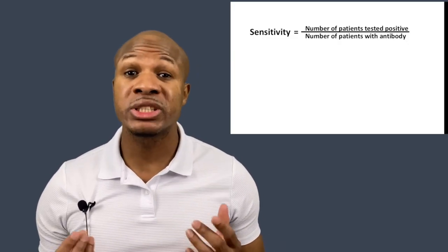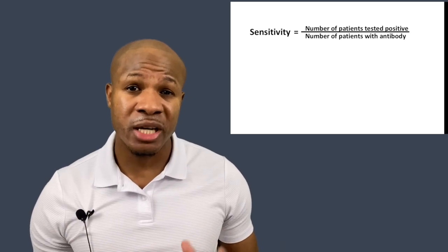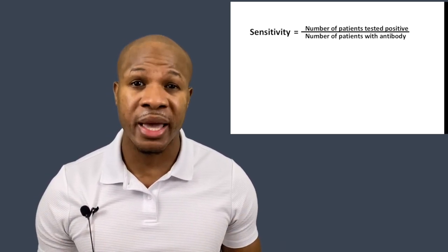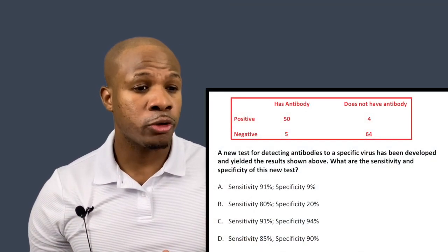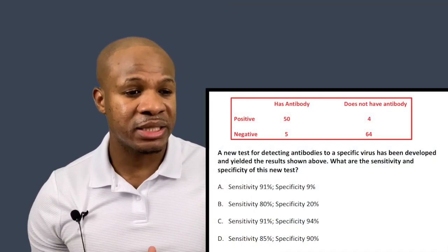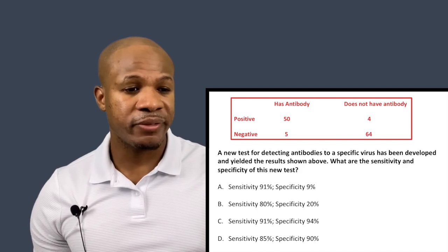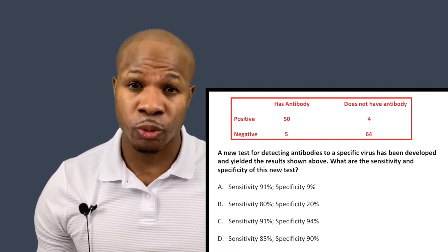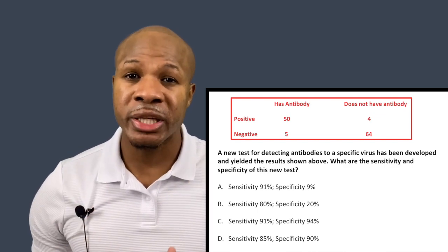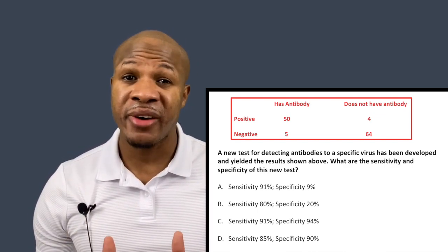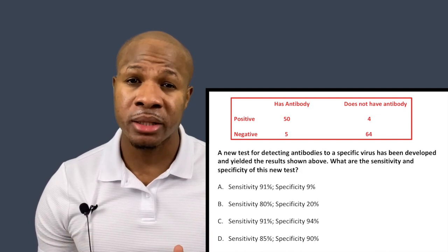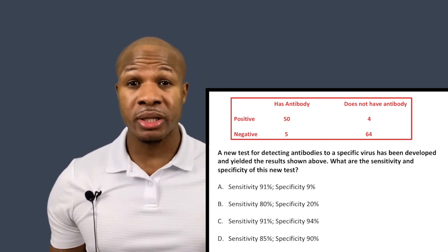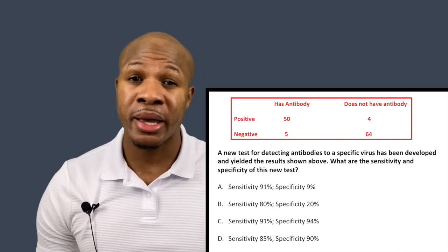For sensitivity, I want this test to tell me that I actually have the antibody when I do have the antibody. For the total amount of patients who actually did have the antibody, there's a total of 55 — that's 50 plus 5. Let's look at how good this test was at letting these patients know they had the antibody. Out of the 55 patients who actually had the antibody, the test was only able to detect it in 50 of those patients — 50 out of 55, which is pretty good.